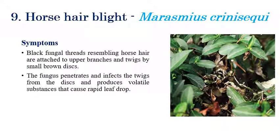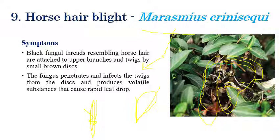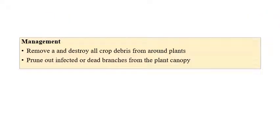Horse hair blight is caused by Marasmius crinis-equi. Symptoms include black fungal threads resembling horse hair attached to the upper surface of twigs. The fungus penetrates inside the twig region and produces volatile substances that cause rapid leaf drop. Once the mycelium penetrates the infected twig, it produces volatile substances leading to leaf drop and wilting-like symptoms.